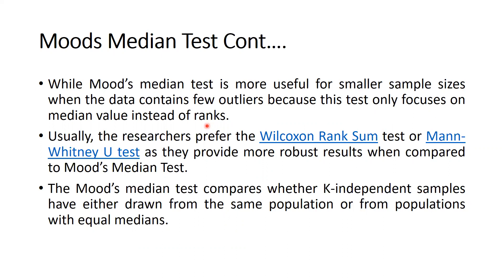For example, if we are working on midterm or end-term marks of 60 students, and the mean or median marks are around 65 out of 100, that represents most students. But if one student has 98 marks while the rest are below 80, that 98 is an outlier. Similarly, if one student has only 2 or 5 marks while all others are above 30, those low marks are also outliers — they do not give a correct picture of that class.